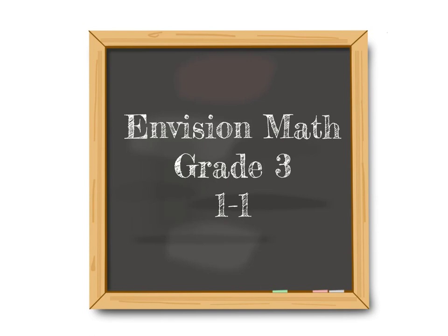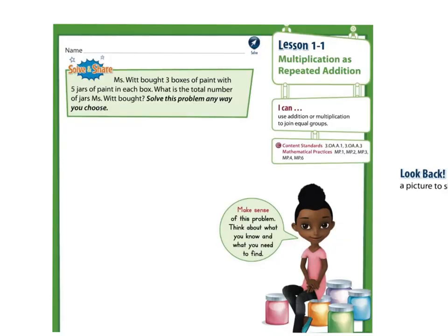Everyday Math Grade 3, Topic 1, Lesson 1. Miss Witt bought 3 boxes of paint with 5 jars of paint in each box. What is the total number of jars Miss Witt bought? Solve the problem any way you choose.